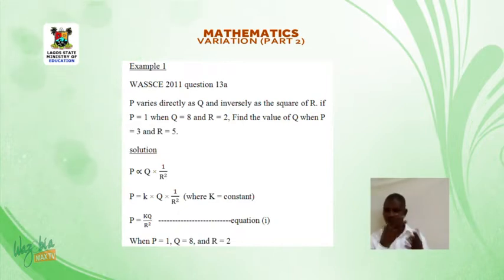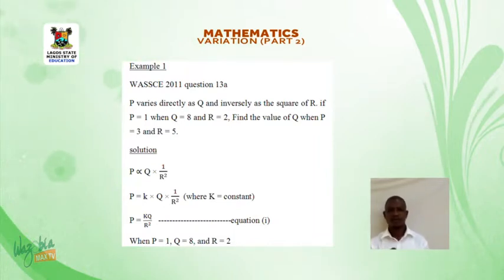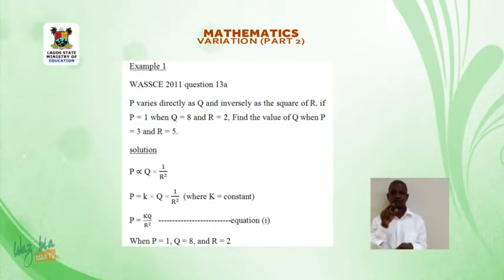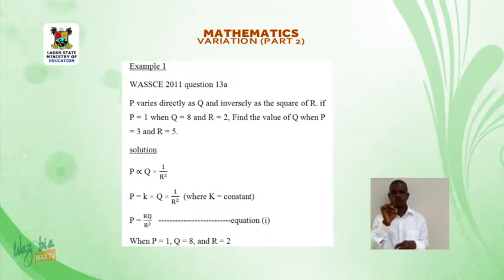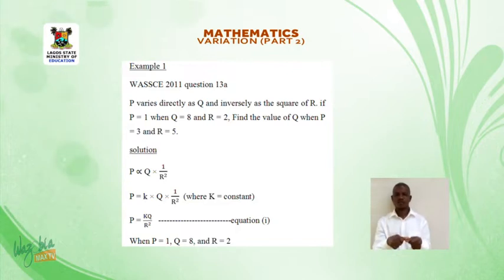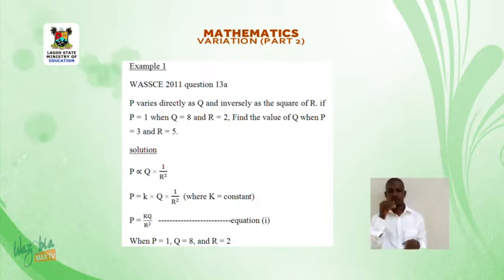Solution. P varies directly as Q and inversely as the square of R. P is equal to K times Q times 1 over R squared, where K is a constant. Therefore, P is equal to KQ over R squared. This is Equation 1.